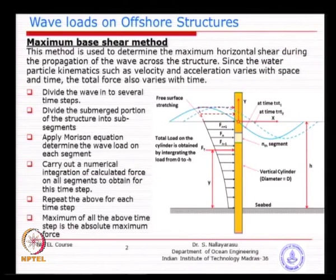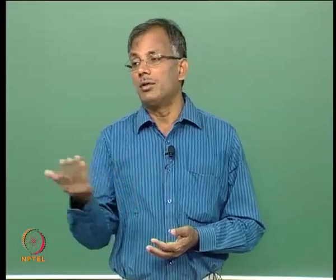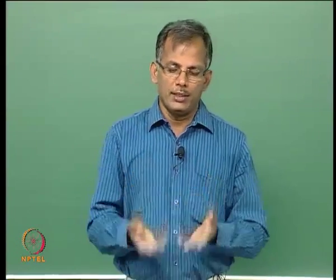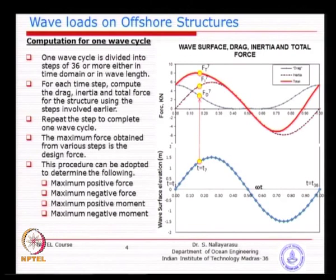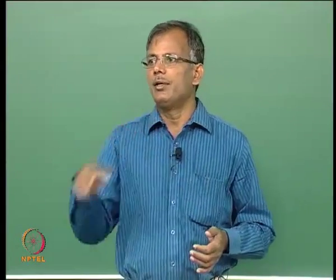You can do all four cases: maximum positive moment, maximum negative moment, maximum positive horizontal force, or maximum negative horizontal force. The principle is the same; only the multiplication factors and the point about which you take the moment differ. The steps involved are: divide the member, divide the wave, for each time step complete one structure by dividing each member into sub-segments, carry out wave force calculation per Morrison equation, find water particle velocities and acceleration, and substitute. Go to the next element, complete one full member, do numerical integration, go to the next time step, complete one wave cycle, and search for maximum values.